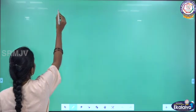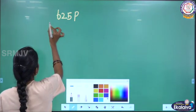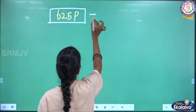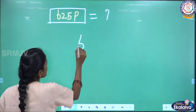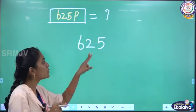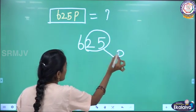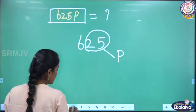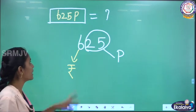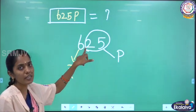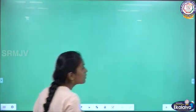Suppose if we have 625 peise — how can we convert into rupees and peise? See, 625 peise. The first 2 digits on the right are peise. Remaining numbers denote rupees. So here the remaining number is 6, so it is rupees. In 625, the first 2 digits on the right are peise, and the remaining numbers denote rupees.